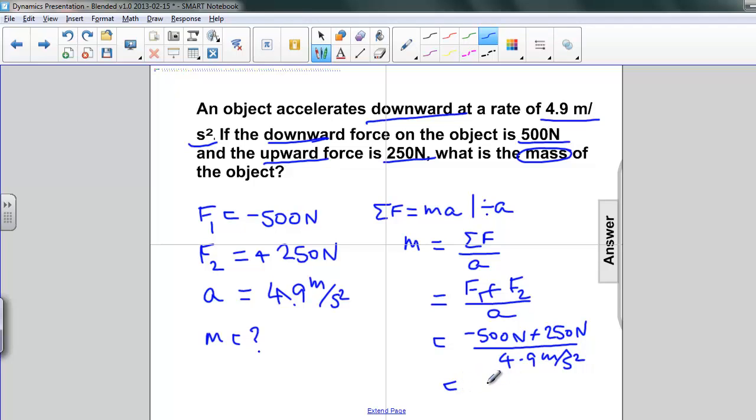That gives us negative 250 newtons divided by 4.9 meters per second squared. If you put that in the calculator, your answer will be about 51 kilograms.